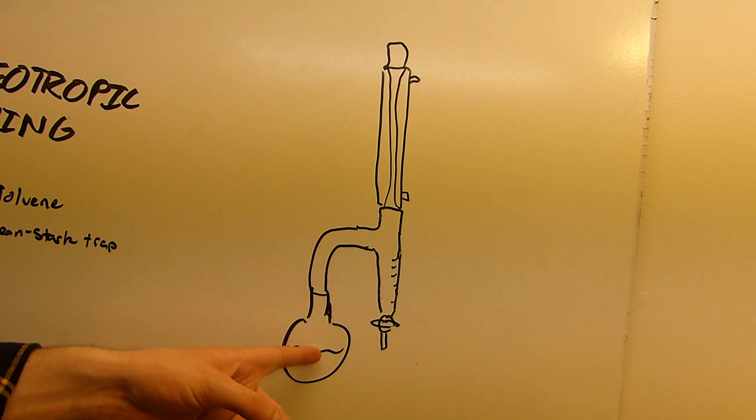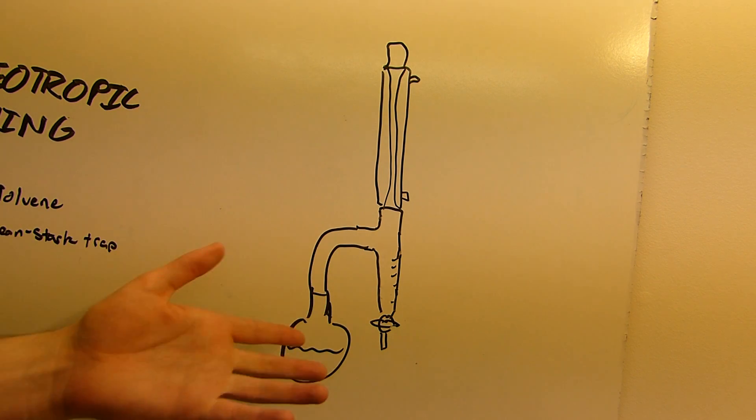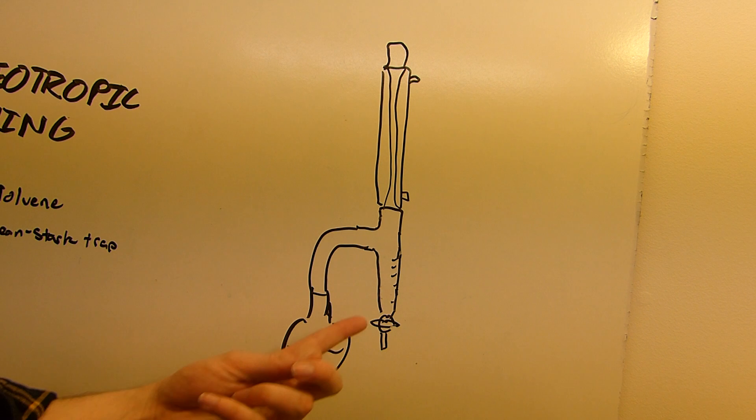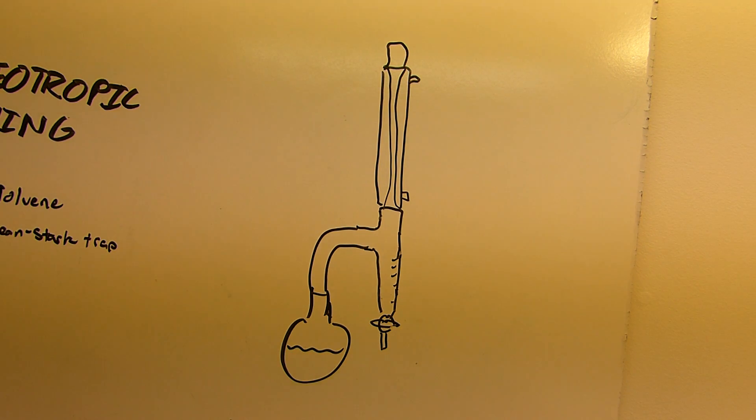So this is a Dean Stark Trap. Well, not this bit and that bit, it's just this funky thing in the middle, and it looks pretty much like that. Some of them have a support bar going across there, and some have a stopcock and some don't, but mine happens to, and actually the ones with the stopcocks are a bit more useful than ones that don't.